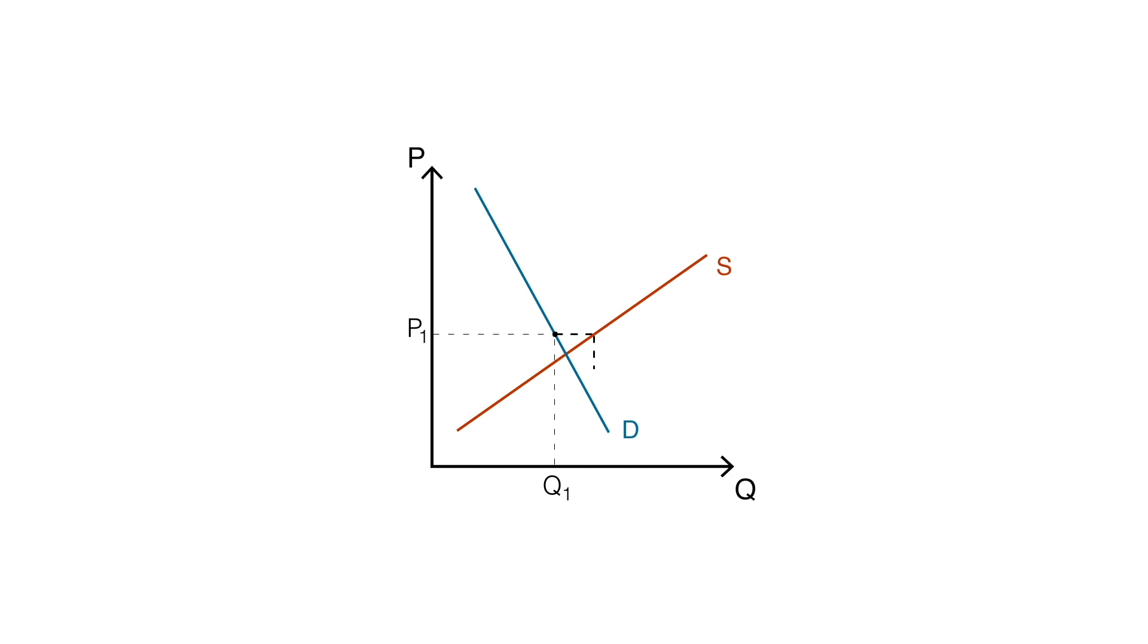However, supply is so high the following year, at Q2, that prices decrease to P2. The process continues in the same way as in the first example, but in this case, an equilibrium is never reached.